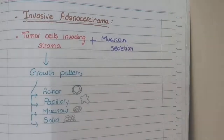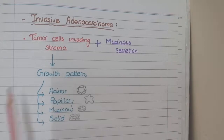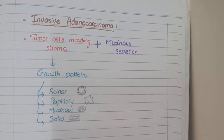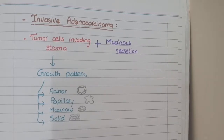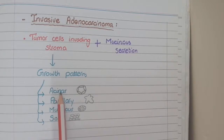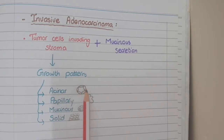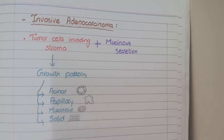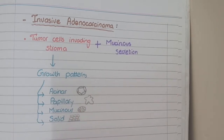Now, in invasive adenocarcinoma, the tumor cells invade the stroma and the depth of invasion is greater than 5 mm. When these tumor cells invade the stroma they grow in one of the following patterns: acinar (gland-like), papillary (finger-like projections), mucinous (in the form of tubules), and solid (lacking any specific arrangement).